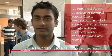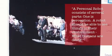A personal robot consists of several parts, which is perception. A robot should be able to see things in the environment, what humans are doing.